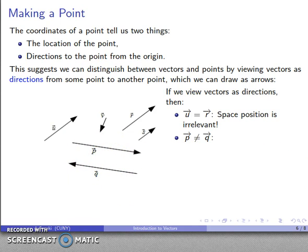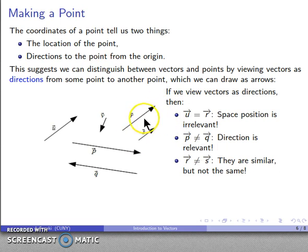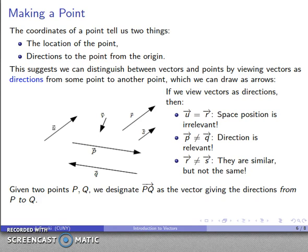Even though in many ways these two look very similar, they're going in different directions, so we have to regard them as different vectors. Here's an interesting case: this vector r and this vector s do appear to be going in the same direction, but they're drawn a little bit differently. There's a similarity between those two vectors, but they're not the same vector, and we'll talk more about how we can distinguish between them.